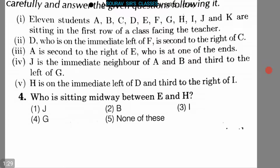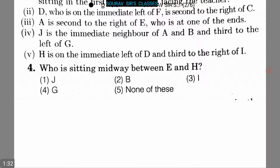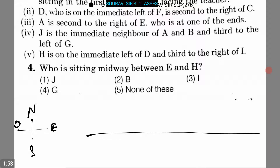Let me draw the arrangement. We assume the teacher is in the north and all eleven students are facing towards north. So this is north, south, east, and west. Here are eleven positions: one, two, three, four, five, six, seven, eight, nine, ten, and eleven.